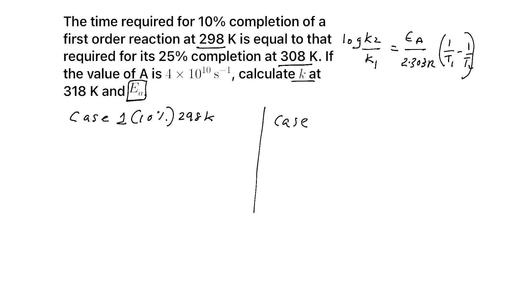Case 1: 10% completion and temperature is at 298 Kelvin. Case 2: 25% completion and temperature is 308 Kelvin. Now, what is the equation for rate constant for first order reaction?